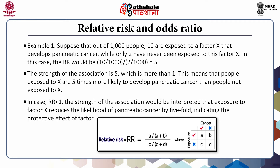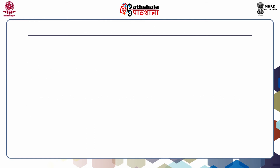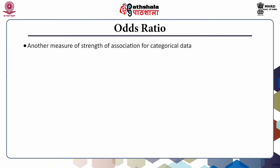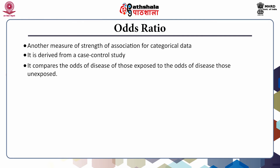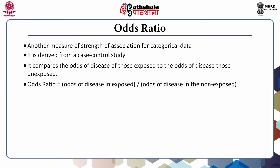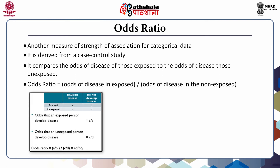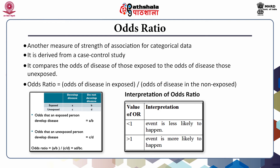This is an example to calculate the relative risk for a particular data set. Another measure of strength of association for categorical data is the odds ratio. It is derived from a case control study and compares the odds of disease of those exposed to the odds of disease of those unexposed. When the value of odds ratio is less than 1, the event is less likely to happen; and if the value of odds ratio is more than 1, the event is more likely to happen.